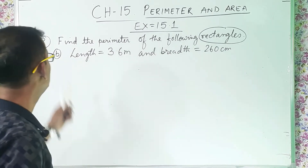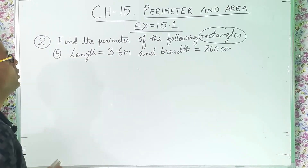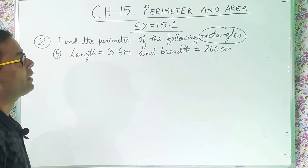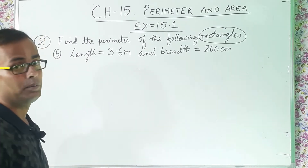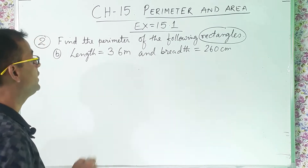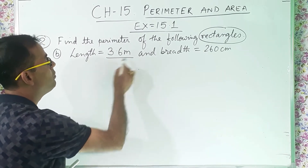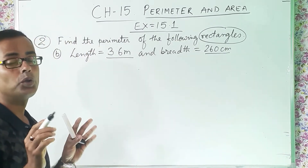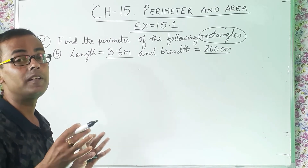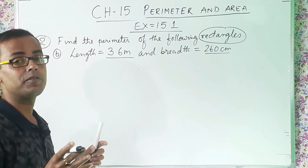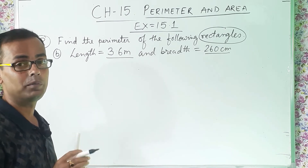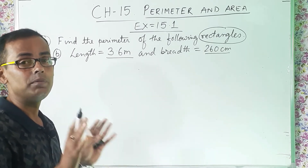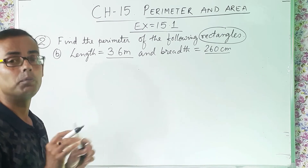Now question number 2b. Length is equal to 3.6 meters and breadth is equal to 260 centimeters. Here one thing you have to understand: length is expressed in meters and breadth is expressed in centimeters — both values are expressed differently. When units are different, we have to make them the same. Either convert both into centimeters or both into meters.